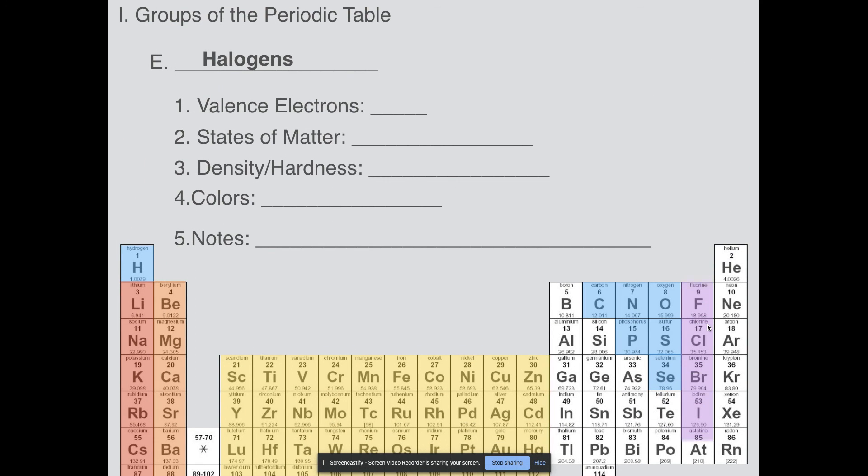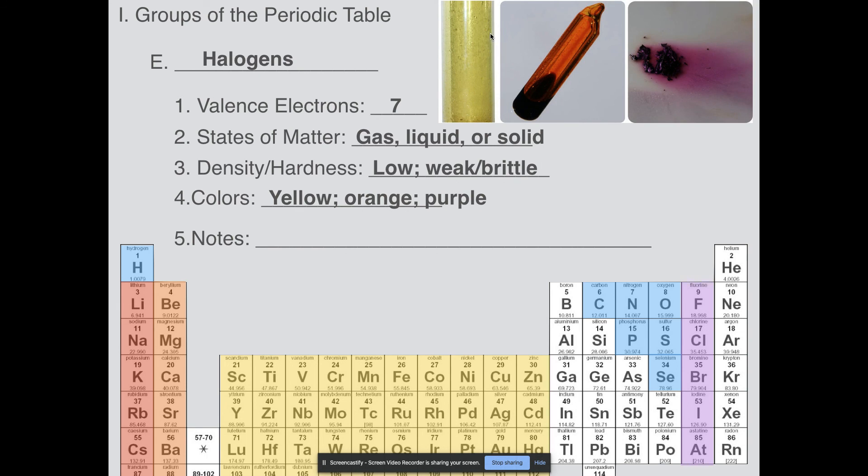Next, halogens. The halogens are right here. They're in the second to last group of the periodic table. They have seven valence electrons. Their states of matter: gas, liquid, or solid. We have all states of matter in this column. Density: pretty low. Also weak and brittle. Colors: yellow, orange, purple. We've got a lot of different colors going on here. In fact, here is some chlorine gas, here is some bromine, and then here is some iodine. I should tell you which ones are which. Fluorine and chlorine at room temperature are gases. Bromine is a liquid. Iodine and astatine are solids.